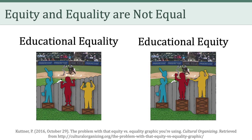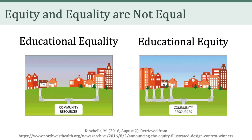Here's another example. In the example on the left, we have educational equality, where two towns get the same amount of community resources. But as you can see, one town needs resources to a greater degree than the other. In terms of educational equity, shown in the graphic on the right, the community resources are distributed differentially based on the needs. As a result, the outcome of the two towns look more similar.